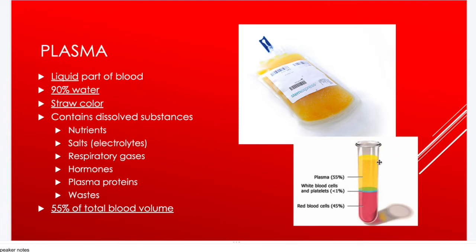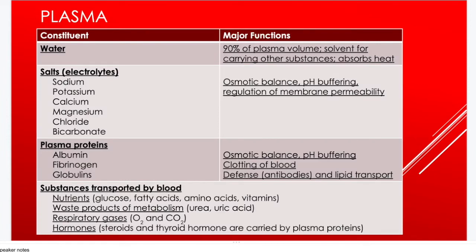Plasma is about 55% of blood volume. The remaining less-than-1% layer between the plasma and red blood cells is called the buffy coat, which includes white blood cells and platelets. The water in plasma — making up 90% of plasma volume — serves as a solvent, dissolving and carrying other substances. It also helps absorb heat, maintaining blood temperature at around 100.4°F.